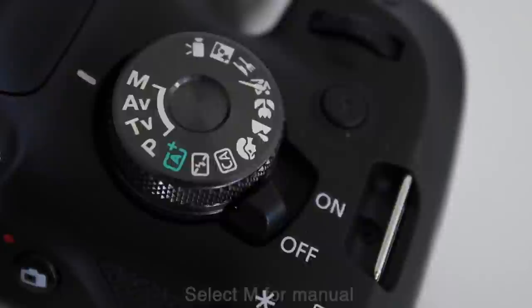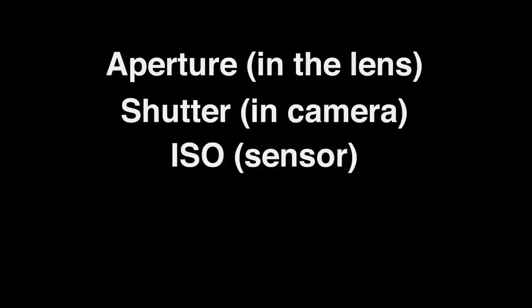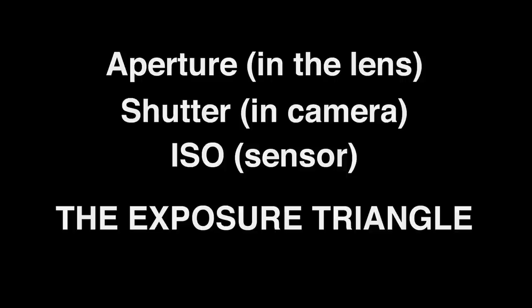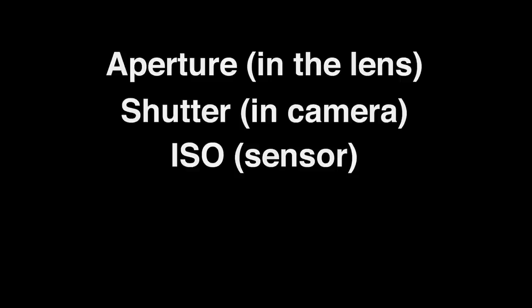Select manual mode on the top of the camera. When you set your camera to manual mode you can control three things: the aperture, the shutter, and the ISO. These three things are commonly known as the exposure triangle. To keep this tutorial short and at a beginner's level, we're going to lock in two settings — we're going to set the ISO to 200 and the aperture to f3.5 — then we can take photos using just the shutter as our variable.